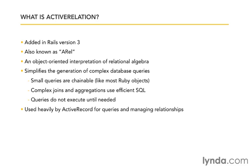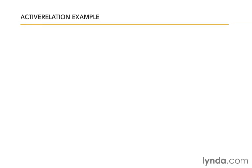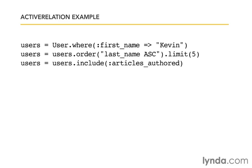Active Relation mostly lives behind the scenes, but it's important to understand conceptually what it does. Let me give you an example to show how simple it is to construct queries using Active Relation. We'll talk more about the query syntax in detail later in the chapter, but this will give you a flavor. In the first line, I've said I want all users where the first name is equal to Kevin.